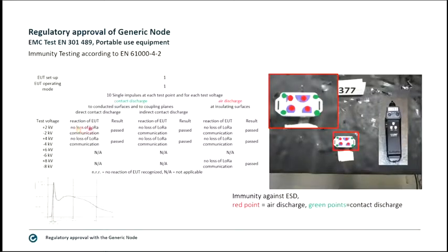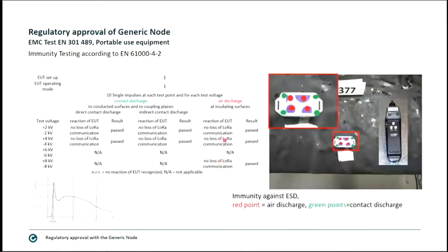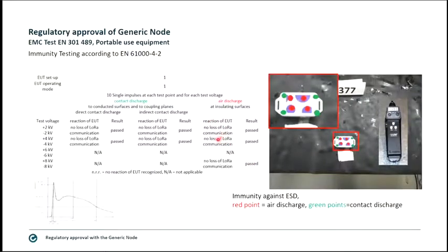The reaction of the EUT results show the device passed. Tests used ±2 kV and ±4 kV for contact discharge; ±6 kV and ±8 kV are required for air discharge, and ±8 kV was used directly. One pulse was applied in the positive direction and one in the negative direction, and the device continued to operate — no loss of LoRa communications.